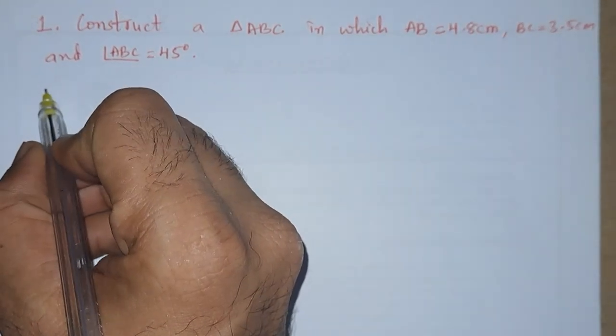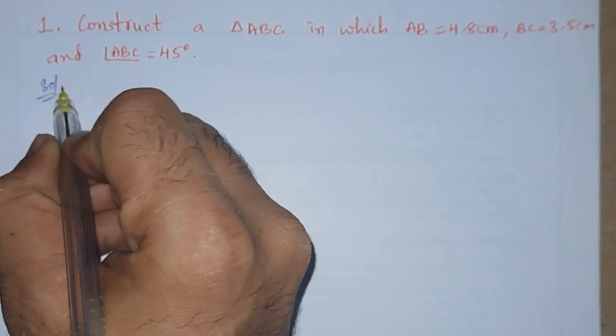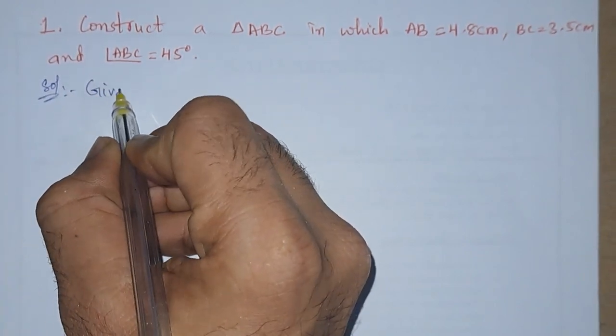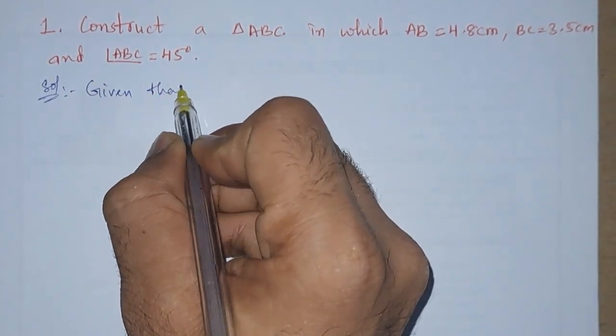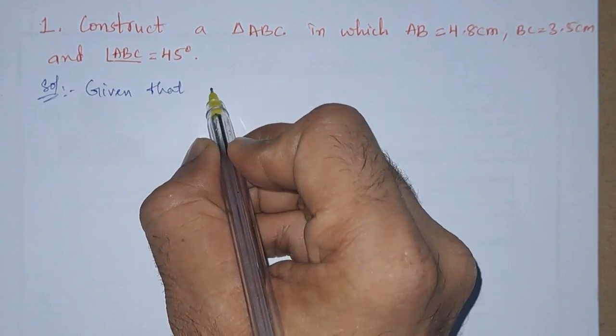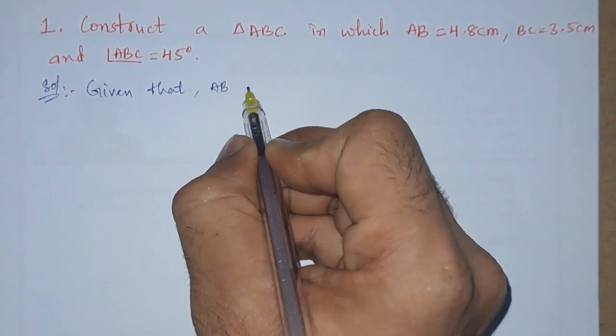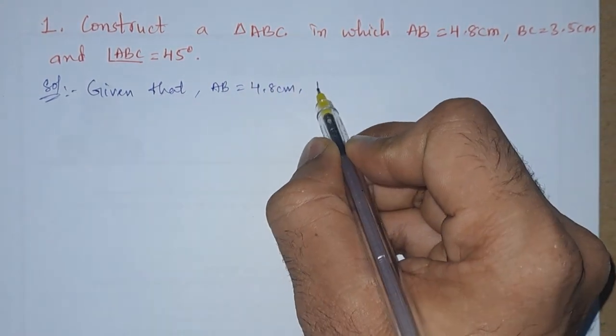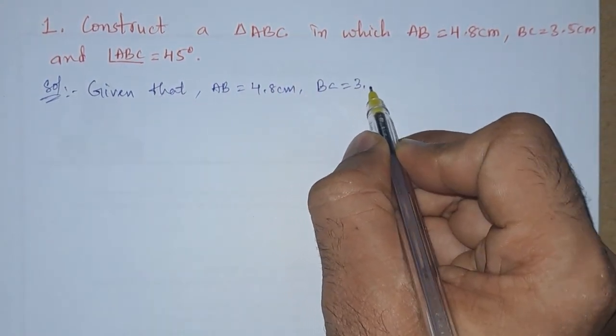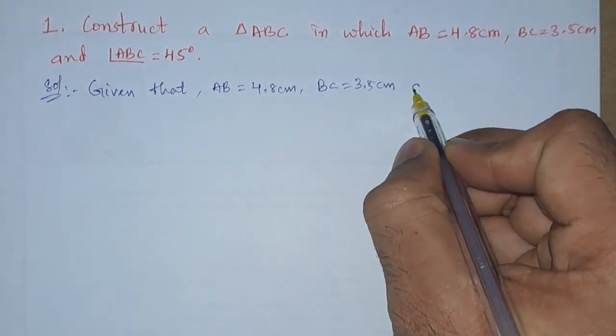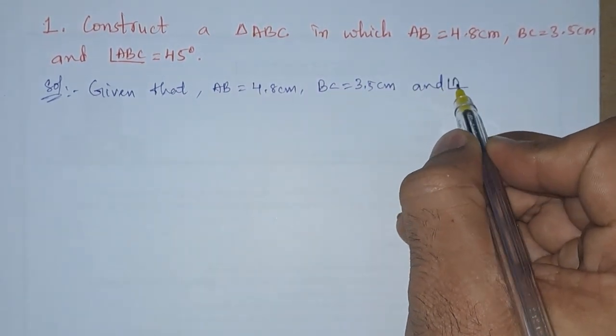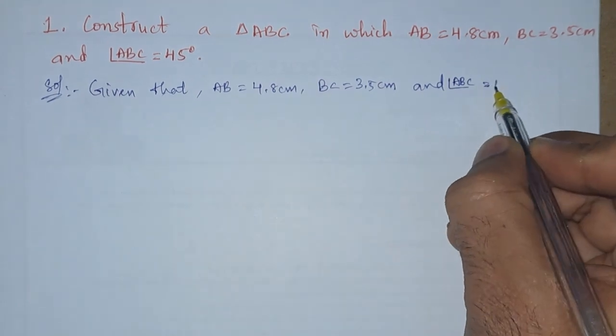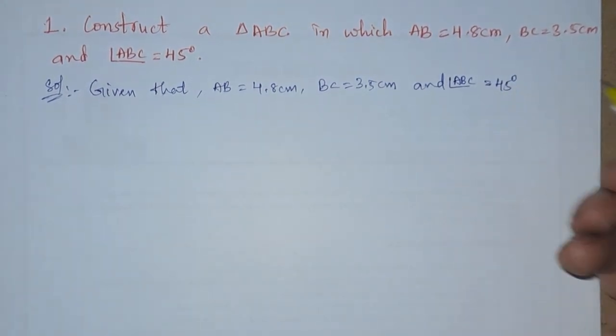Now first of all we will write down what is given. Given that AB is equals to 4.8 centimeter, BC is equals to 3.5 centimeter, and angle ABC is equals to 45 degrees.